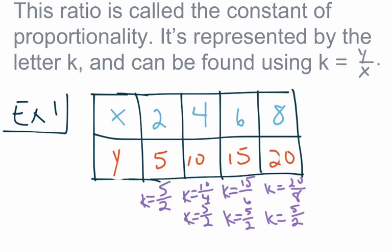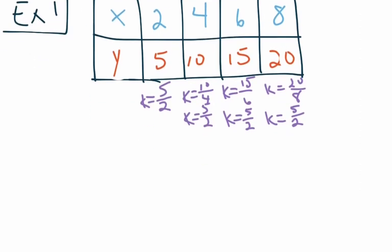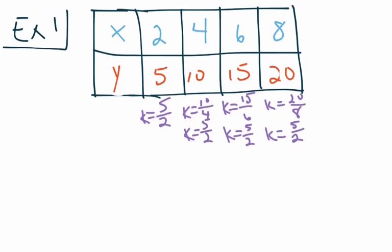Now, to use that information to write an equation, we use the form Y = KX. We substitute our value of K into the equation, so the equation representing this table is Y = 5/2 X. The table and the equation represent the same relationship, just written differently.